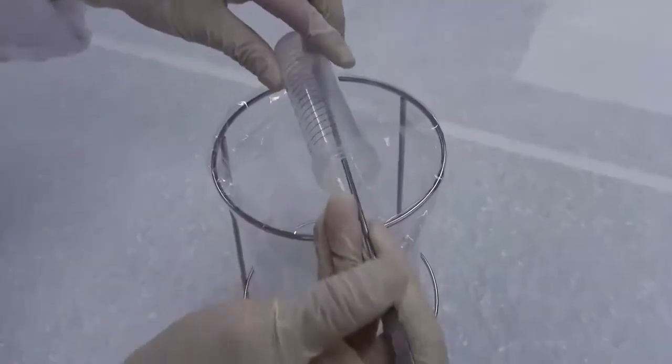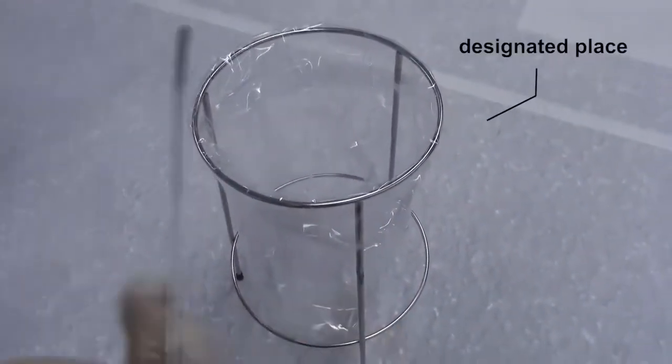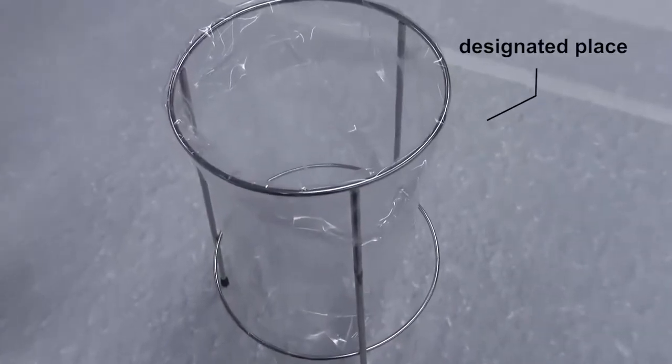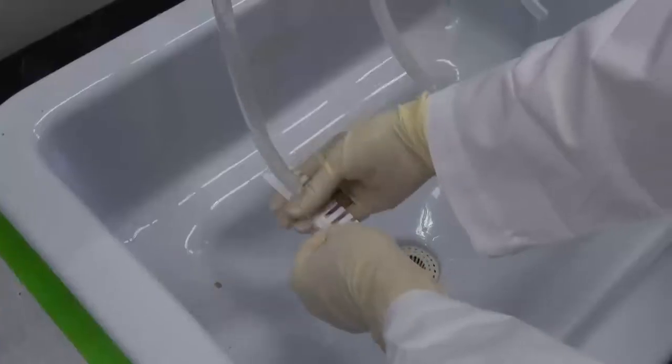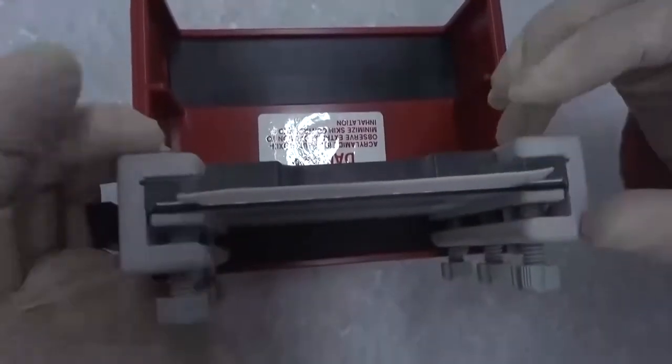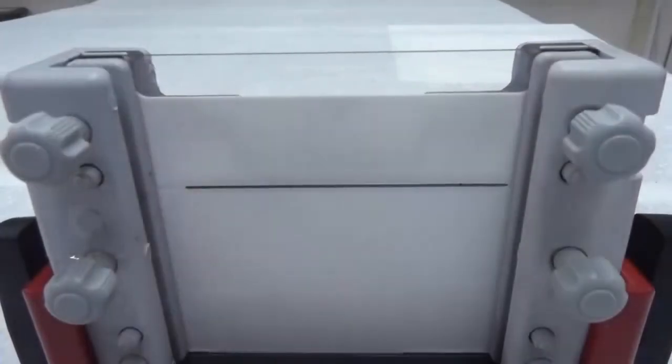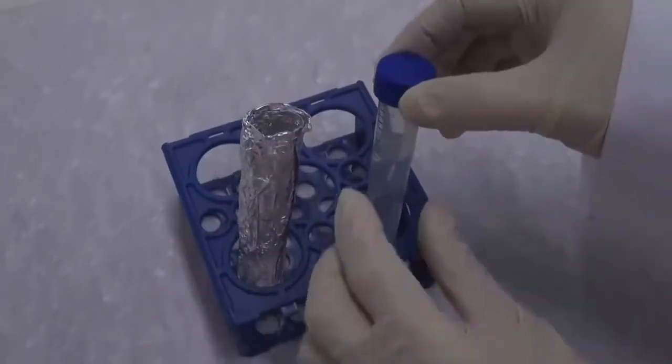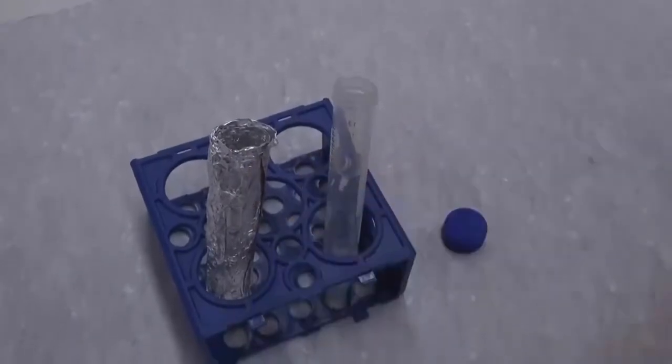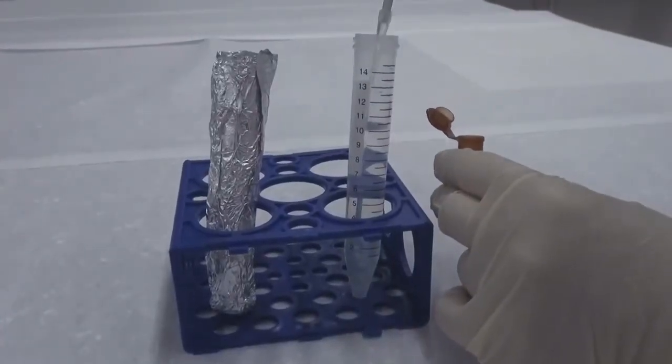The gel solution that has not polymerized completely is still toxic and must be disposed at designated places. After the lower gel polymerizes successfully, preparation of the upper gel may start. Wash and dry the comb, make it flat, and insert it between the plates for testing. If everything is good, pull the comb out for later use. Again, take the centrifuge tube containing the upper gel solution and open the lid. Add proper volumes of TEMED and APS into the gel solution. When the temperature is low, the volume of APS may be doubled.